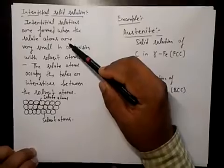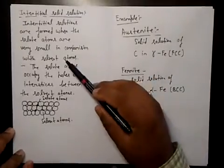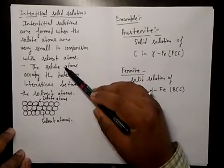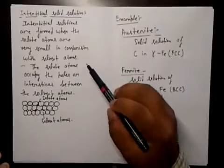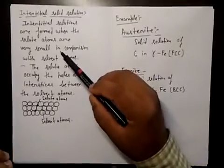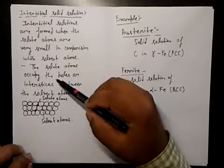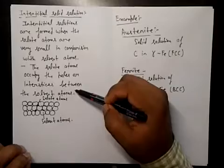Interstitial solid solutions are formed when the solute atoms are very small in comparison with solvent atoms. So solute atoms are much smaller. The solute atoms occupy the holes or interstices between the solvent atoms.